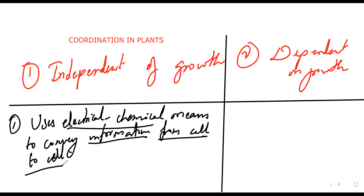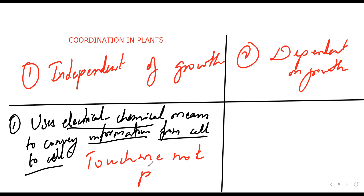For example, if we take the touch-me-not plant and touch it, the leaves will shrink. This response is a stimulus that is independent of growth.